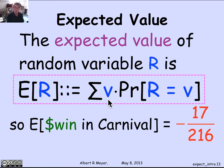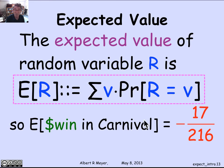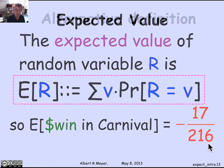What we've just concluded is that the expected win in the Carnival Dice game is −17/216. Check this against the formal definition of the expectation of the random variable defined as how much you win on a given play of Carnival Dice, and it comes out to that average of −17/216.